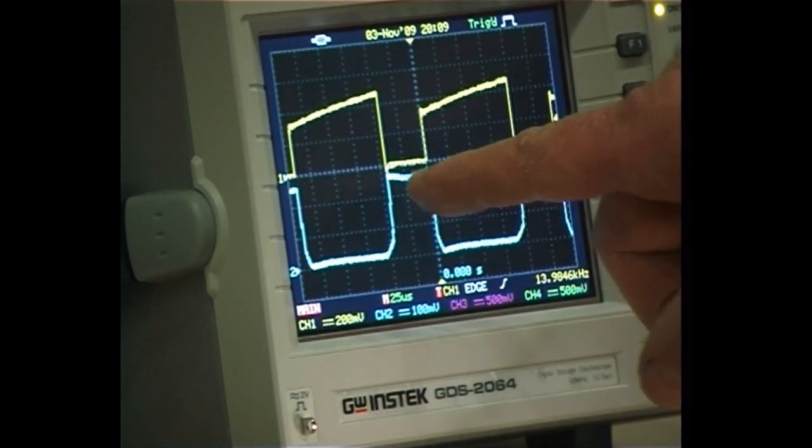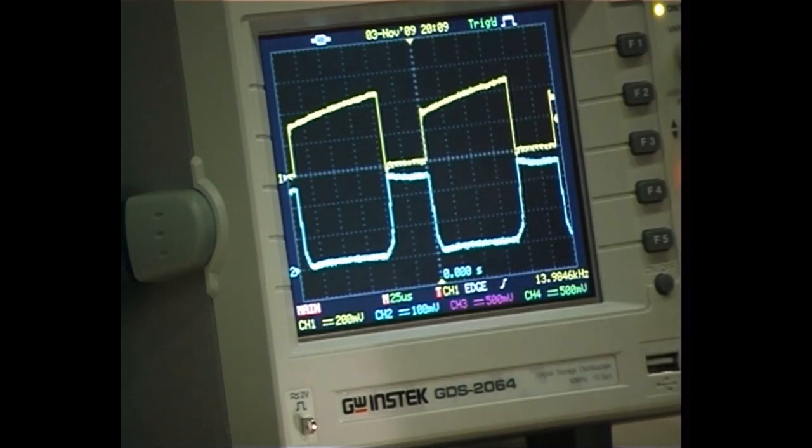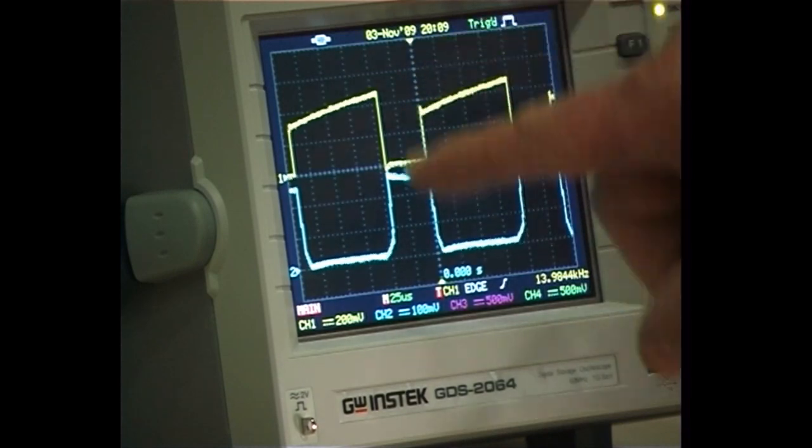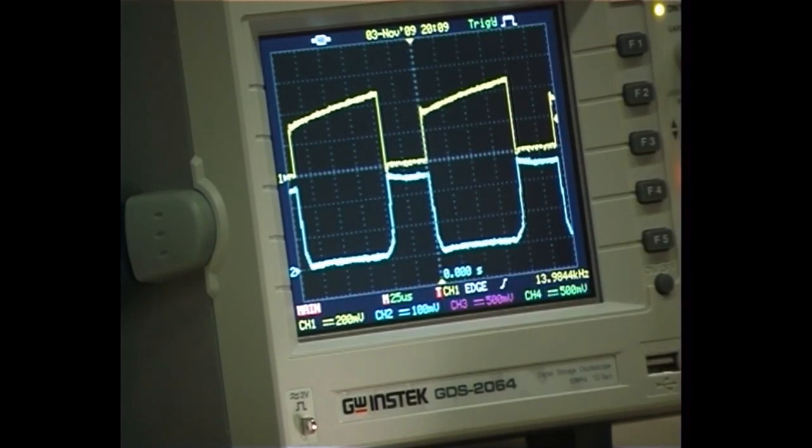When the MOSFET is off, there's no current and the voltage is high. What I want to demonstrate and look at in detail is the switching at turn on, and we'll look at the characteristics of the MOSFET to do that.